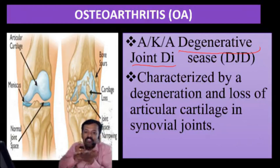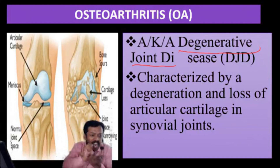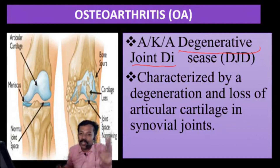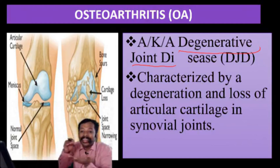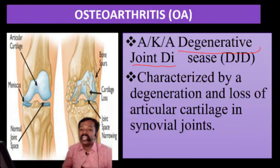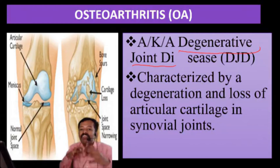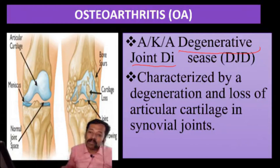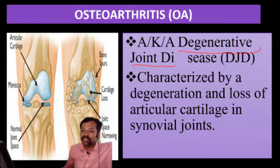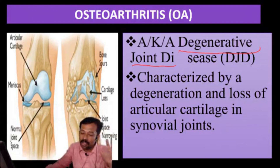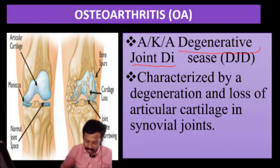That plate — the cartilage plate — is there for avoiding friction and for smooth movement. But that cartilage plate becomes inflamed and degenerated. That condition is simply called osteoarthritis.